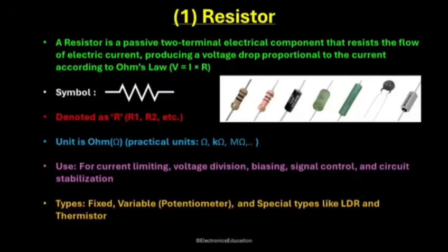In simple terms, a resistor controls how much current flows through a circuit. It's like adding friction to the flow of electricity. The symbol of a resistor is represented by a zigzag line connected at both ends with straight terminals. In some modern diagrams, especially in European standards, it is drawn as a rectangular box, but both mean exactly the same thing.